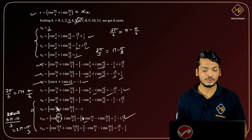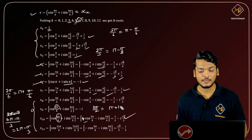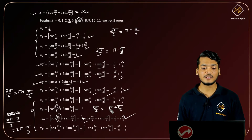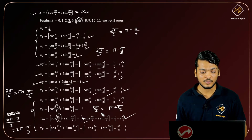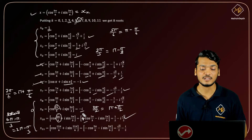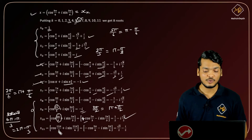Similarly, for 3π/2, write it as π + π/2. So cos(π + π/2) = -cos(π/2) = 0, and sin(π + π/2) = -sin(π/2) = -1, giving -i.